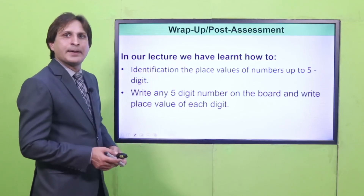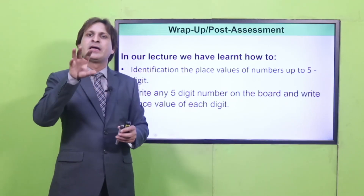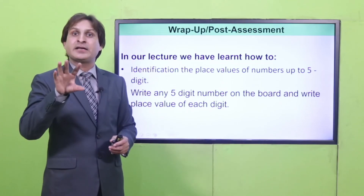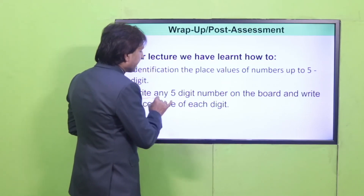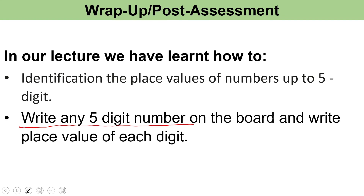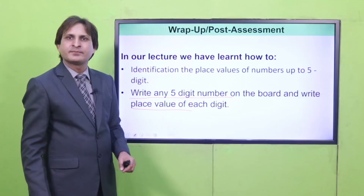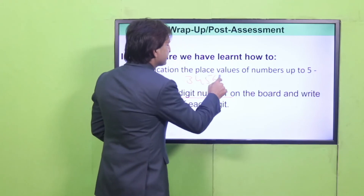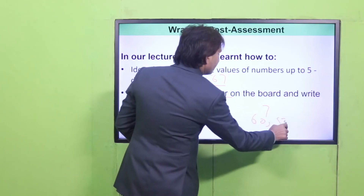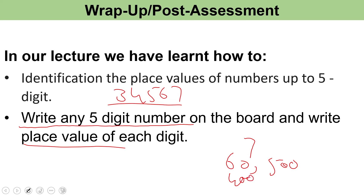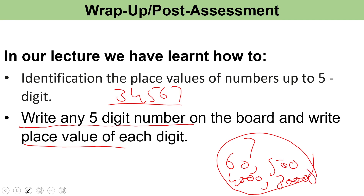What did we see in today's lesson? We saw how to recognize and identify the place value of a particular digit in a given number, its expanded form, and standard form. Now write any five-digit number on the board and write the place value of each digit. For example: 34,567 — place values are 7, 60, 500, 4000, and 30,000. To find the place value: for whichever digit you choose, attach as many zeros as the digits to its right.